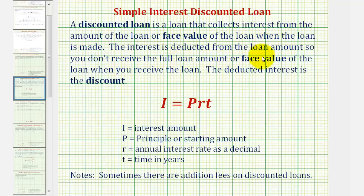The interest is deducted from the loan amount so you don't actually receive the full loan amount or face value of the loan when you receive the loan. The deducted interest is the discount.